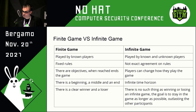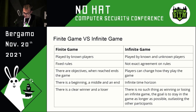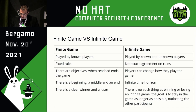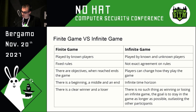Finite games are most games we know. They are played by known players, have fixed rules, and have objectives — when those objectives are reached, the game ends. There is a clear winner and loser. Infinite games, by contrast, always have new players coming and going. They are played by known and unknown players. There is no precise agreement on rules, and players can change how they play. There is no clear definition of winning or losing an infinite game. The goal of an infinite game is to stay in the game as long as possible. Business is an example of an infinite game — it was born before us and will continue after our lives.